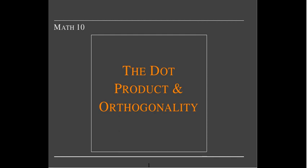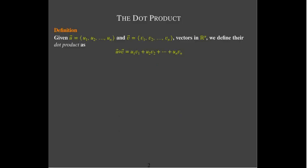In this short video we're going to talk about two important ideas. The first one, called the dot product, is actually an operation that can be performed with two vectors. And the second idea comes from the dot product — it's the notion of orthogonality. That would be the equivalent idea of perpendicular when we're talking about geometry. So let's start with the dot product.